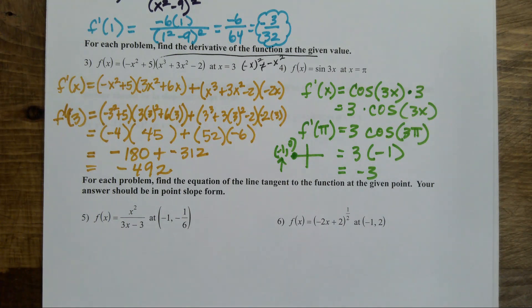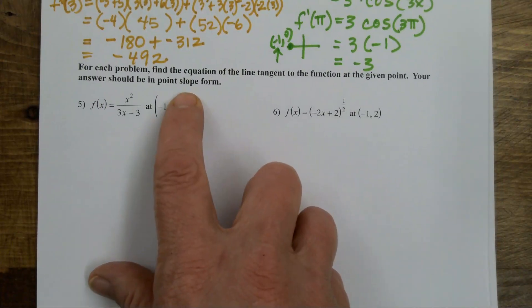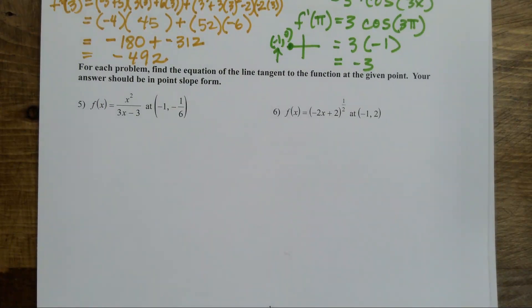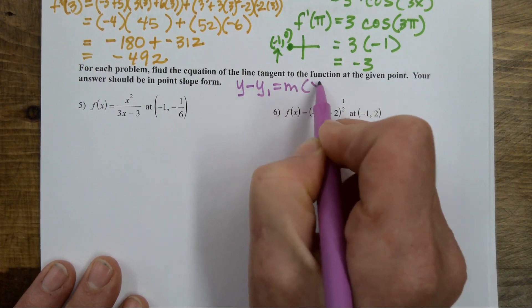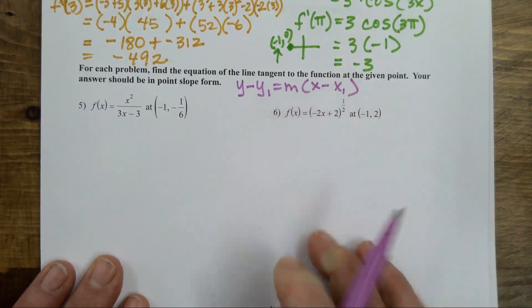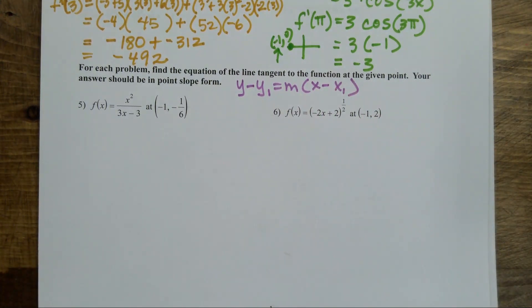Let's get some equations of lines going. How do I know if I'm going to have to find an equation of a line versus just the slope? Read the directions. We want our answer in point-slope form — y minus y1 equals slope times x minus x1. It's a very easy form to use because all I need is a point and a slope.